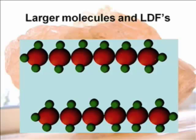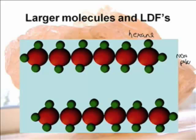Let's say I have two large molecules — these are molecules of hexane. Hexane is a liquid at room temperature and actually has a relatively high boiling point. The interesting thing is that it is nonpolar. One reason you know it's nonpolar is that if you stuck it in water, it will not mix. Water is polar, and as you know, polar dissolves polar and nonpolar dissolves nonpolar, but they don't dissolve each other.